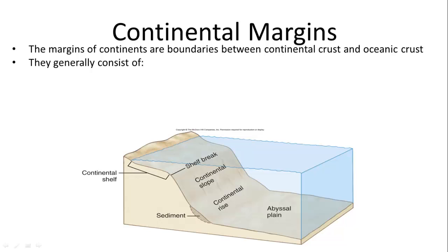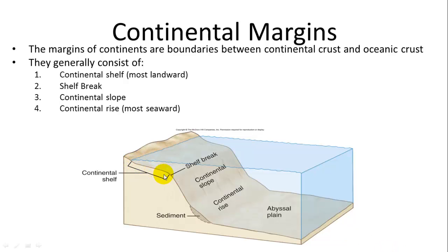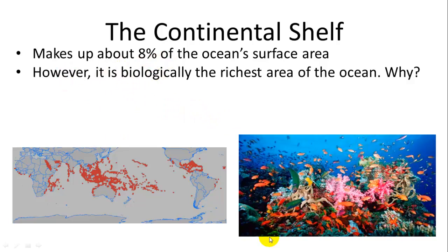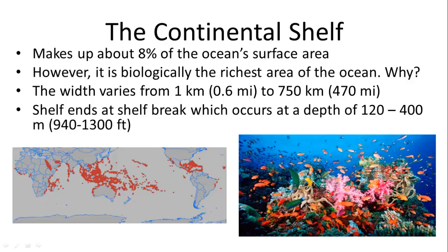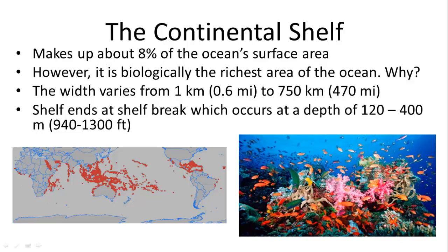Where a continental plate and an oceanic plate meet, there is a margin with four parts: the continental shelf (the shallow area), the shelf break (where it becomes steeper), the continental slope, and the continental rise (where sediments accumulate at the base). The continental shelf makes up about 8% of the ocean surface and is the most biodiverse region, because light can penetrate for photosynthesis and nutrients cycle readily. It varies in width from 1 to 750 kilometers, ending at the shelf break at 120 to 400 meters depth.